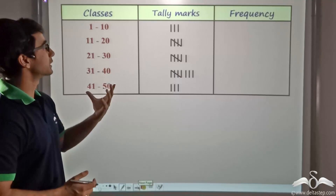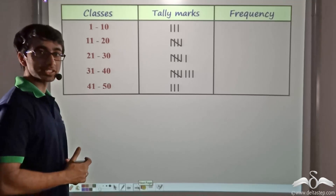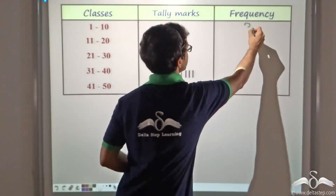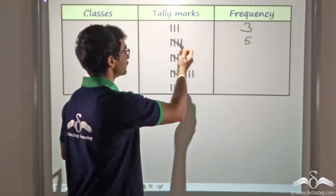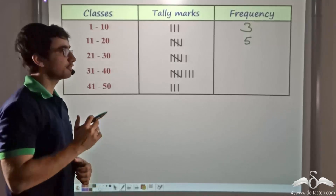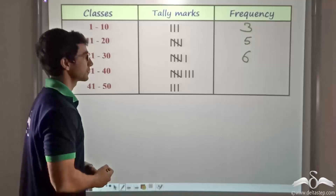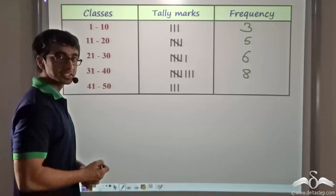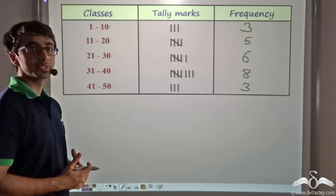Thus I obtain the tally marks as you can see. Now it is very easy to say what the frequency corresponding to the tally marks is. For the first case, the frequency is 3. For the second case, the frequency is 5 — because four vertical lines crossed by a slanted line represents 5. In the third case the frequency is 6, in the fourth case the frequency is 8, and in the last case the frequency is 3. Thus we have obtained the grouped frequency distribution table.